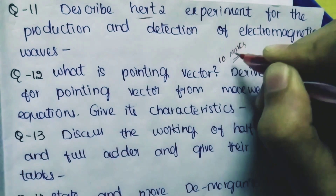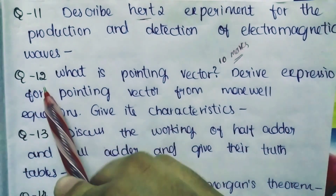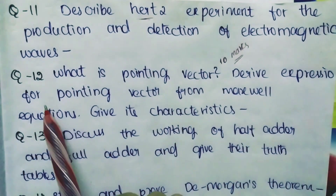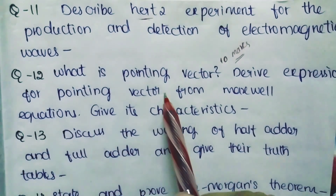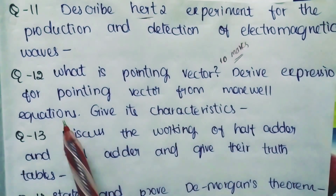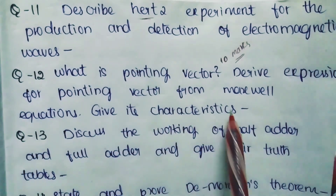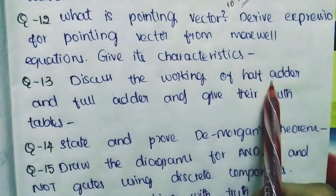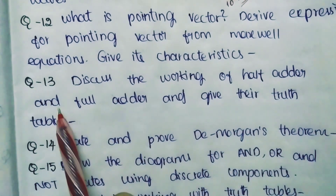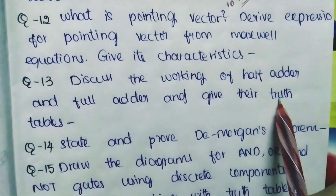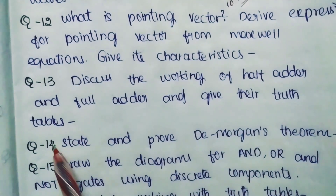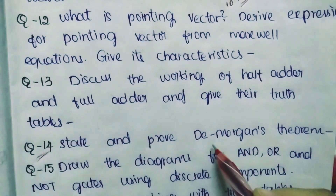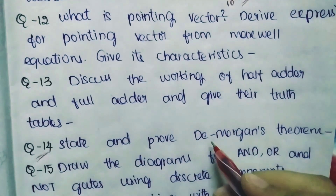Question Number 12: What is Poynting vector? Derive expression for Poynting vector from Maxwell's equations and give its characteristics. Question Number 13: Discuss the working of half adder and full adder and give the truth tables. Question Number 14: State and prove De Morgan's Theorem.